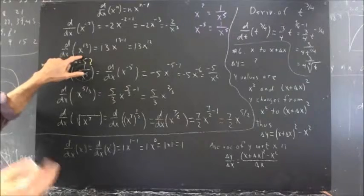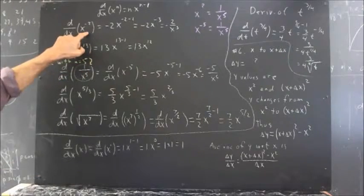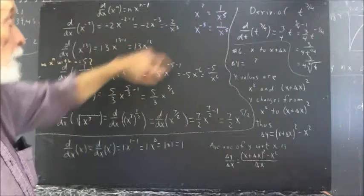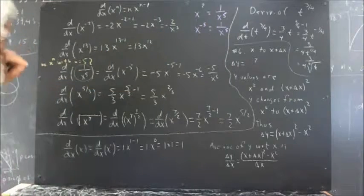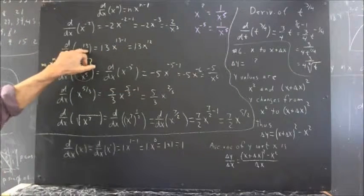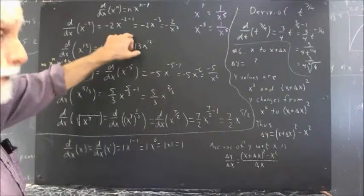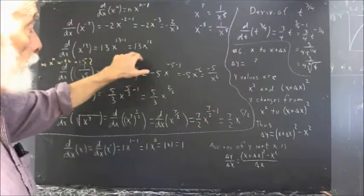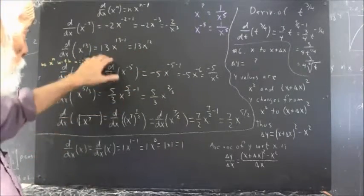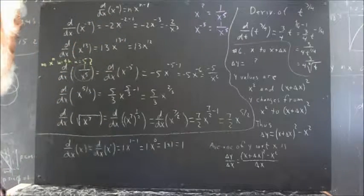People had no difficulty at all with this one, except they didn't write this out. The derivative with respect to x of x to the 13th is 13x to the 13th minus 1, which is 13x to the 12th. Very straightforward application of the rule in this case.